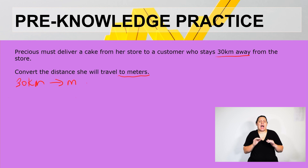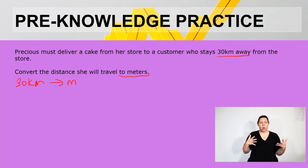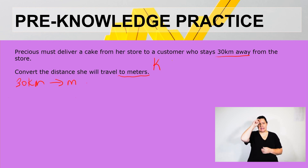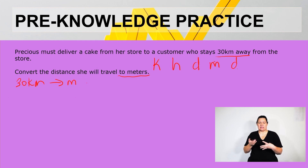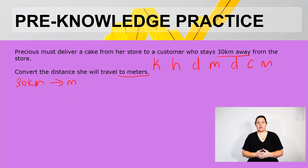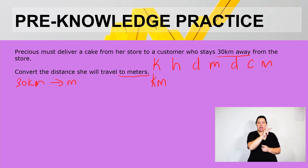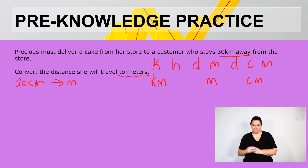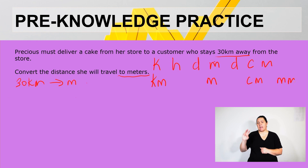The easy way of doing this and ensuring that we always get the correct answer is the King Harry method. We have: King Harry Died Miserable Death Called Measles. From this, remember we only work with K for kilometers, M for meters, C for centimeters, and the last M for millimeters.